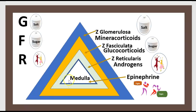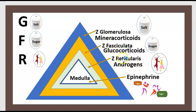The adrenal gland has two areas: medulla and cortex. There are three zones in the cortex: the glomerulosa zone, the fasciculata zone, and the reticularis zone.